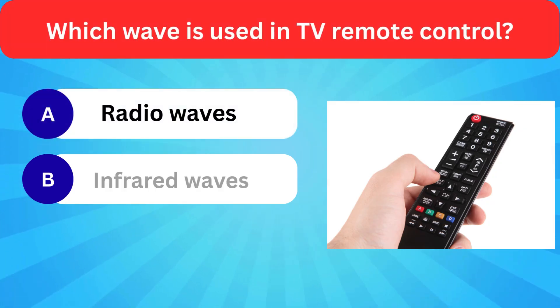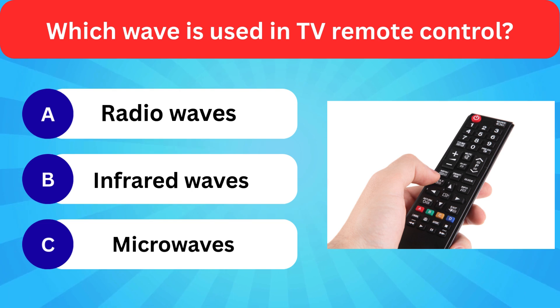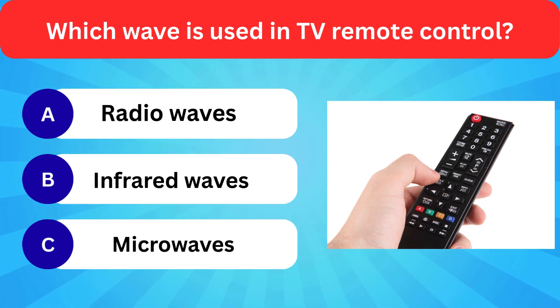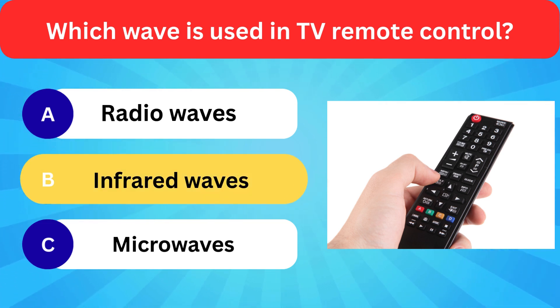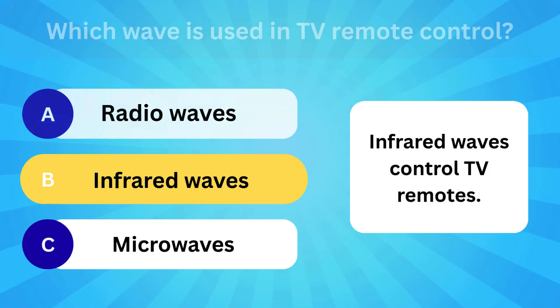Which wave is used in TV remote control? Options: Radio waves, Infrared waves, Microwaves. Correct answer is infrared waves. Infrared waves control TV remotes.